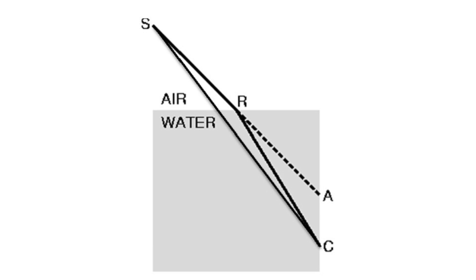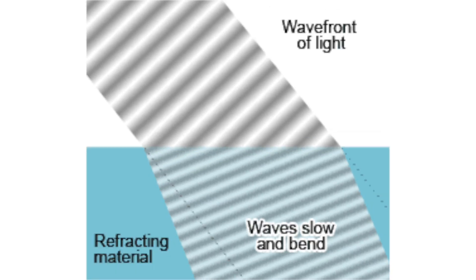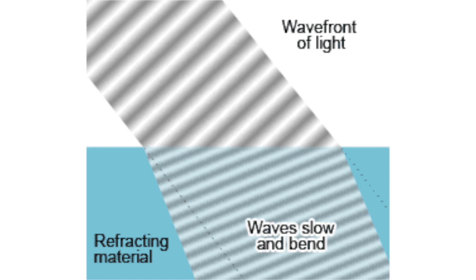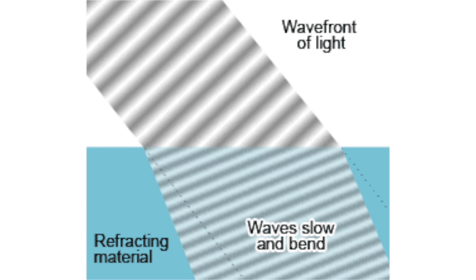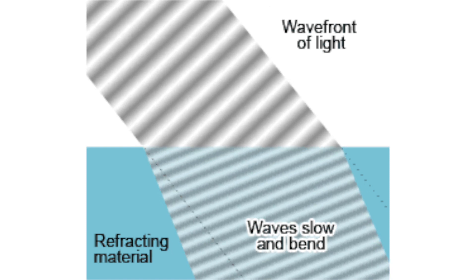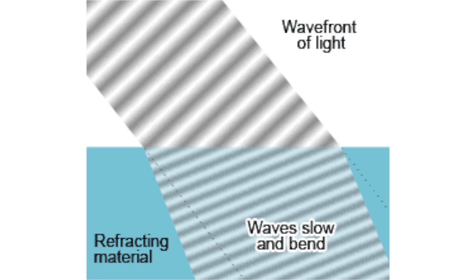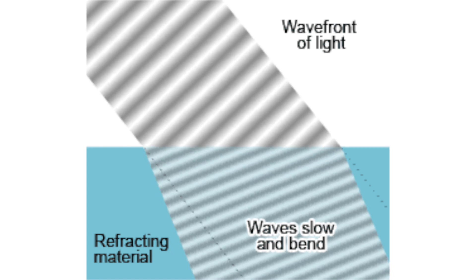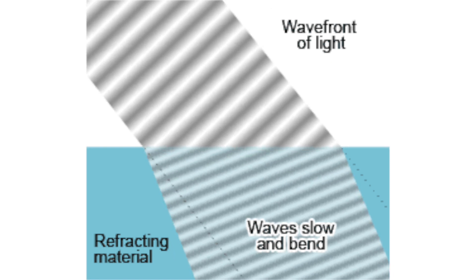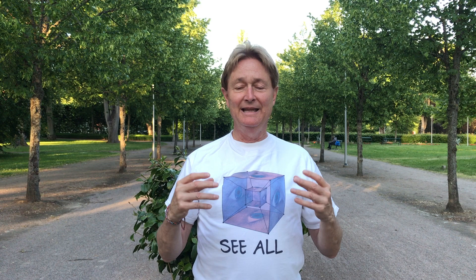The Newtonian schema explanation is that the light emitted from S proceeds towards R without deviation, since nothing is interacting with it, until it hits the water at point R. The water then refracts or bends the light according to Snell's law towards point C. While both methods yield the same result, we tend to favor the Newtonian schema explanation, since the Lagrangian schema explanation sounds a bit like the light ray intended to go to sea and calculated its path based on the presence of the water.